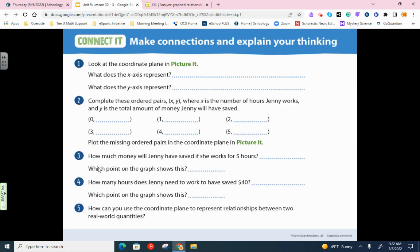I'll go a little quickly here, but you can just basically pause or hit pause on the video to do it. So what does the x-axis represent? That is the hours Jenny worked. The y-axis represents the money Jenny saved. And complete these ordered pairs where x is the number of hours Jenny works and y is the total money that Jenny saved. So at zero hours, it was $20 she had. At one hour, it was $30. Two hours was $40. Three hours was $50. Four was $60. And five was $70.